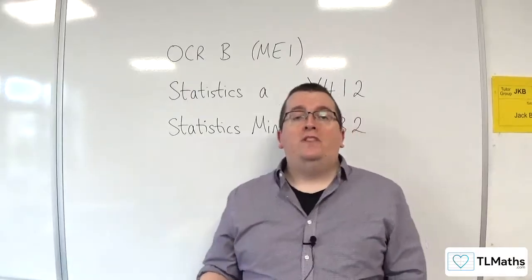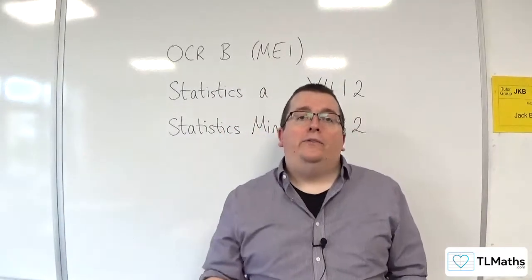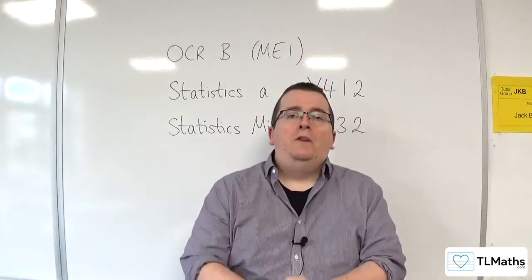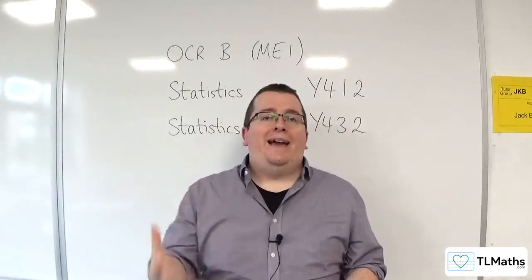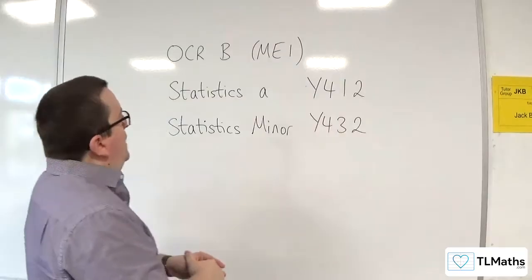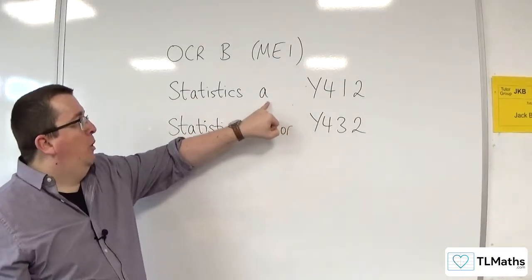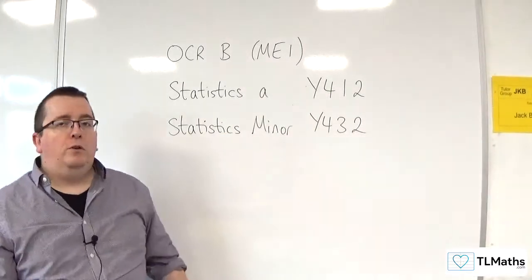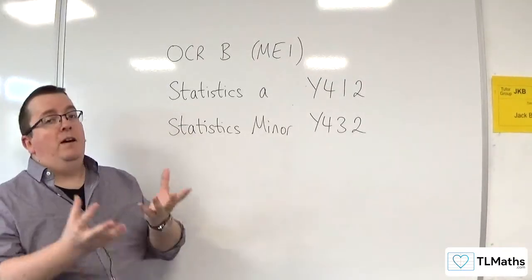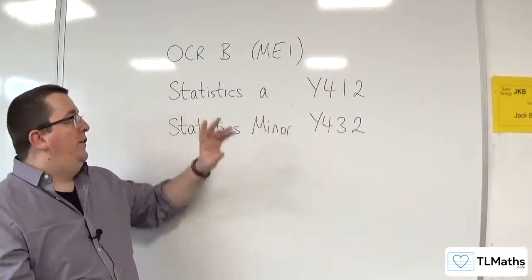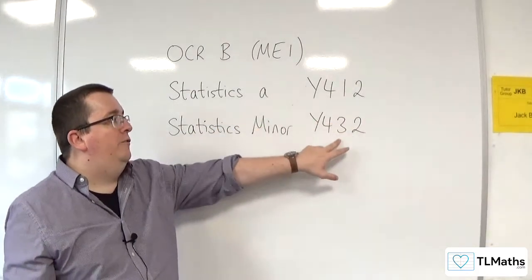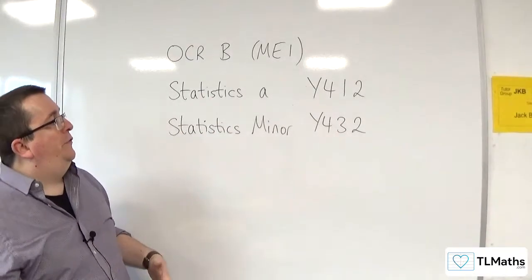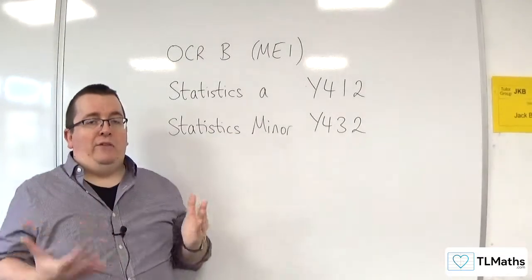In this playlist, I'm going to be covering the material for OCR MEI's Statistics A and Statistics Minor modules or options for AS Level Further Maths and A Level Further Maths. The Statistics A module for AS Level Further Maths and the Statistics Minor option for A Level Further Maths both cover the same content — these are the codes Y412 for AS and Y432 for Full A Level. So essentially this playlist will go through everything that is in those options.